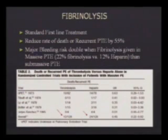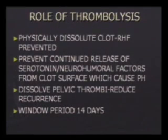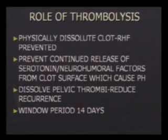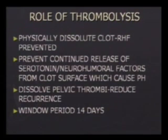Studies show that with heparin alone, the bleeding risk is 12%, but with fibrolytic therapy it rises to 22%. Thrombolytic therapy physically dissolves the obstructing clot, preventing right heart failure. It also prevents continued release of serotonin and neurohumoral factors from the clot surface — factors that cause pulmonary hypertension. Once the clot is dissolved, platelet-derived serotonin release stops and pulmonary hypertension is prevented. Additionally, thrombolytics dissolve pelvic thrombi, a potential source of recurrent PE, so recurrence risk also decreases.